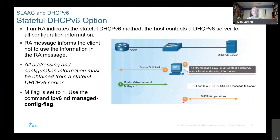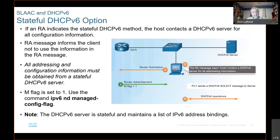Stateful DHCPv6 operation — this is where the M flag is going to be set. The way this works is PC1 reaches out to the router. The router says the M flag is set, so you need to get everything from the server. When the PC receives that router advertisement message, it must contact the DHCPv6 server. The PC and the server chat back and forth to get all of the information, including the address itself. This is stateful, which means a list of addresses is maintained by the IPv6 address bindings.